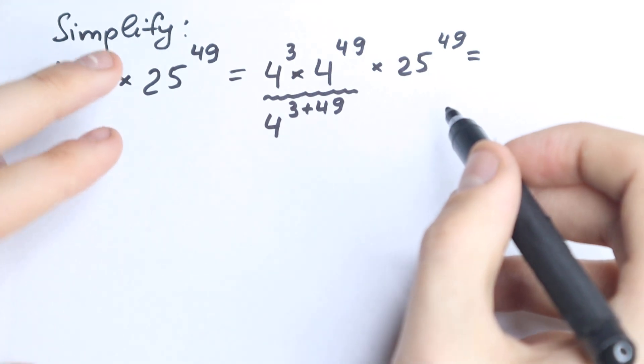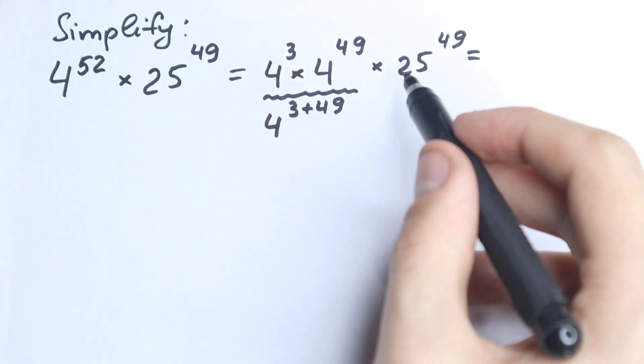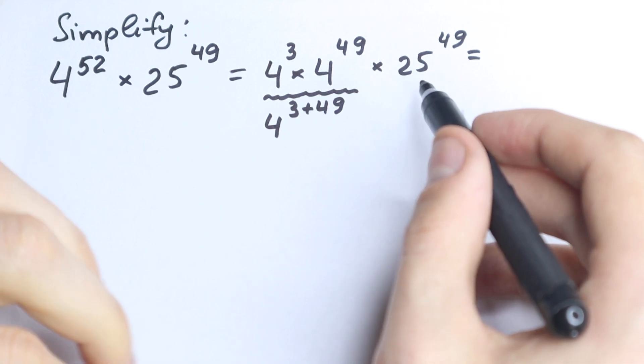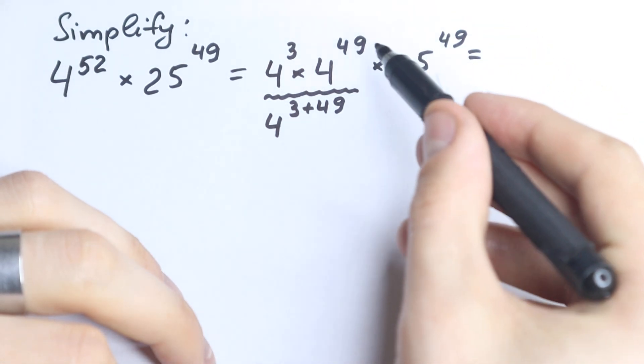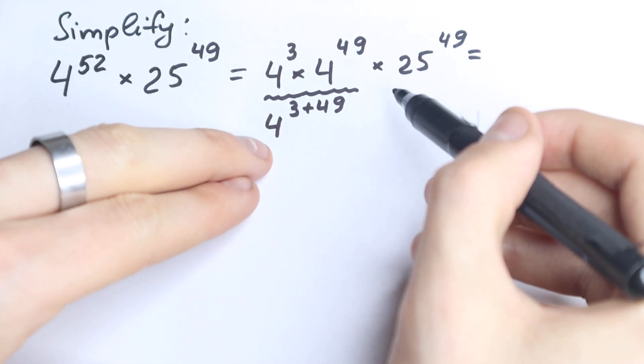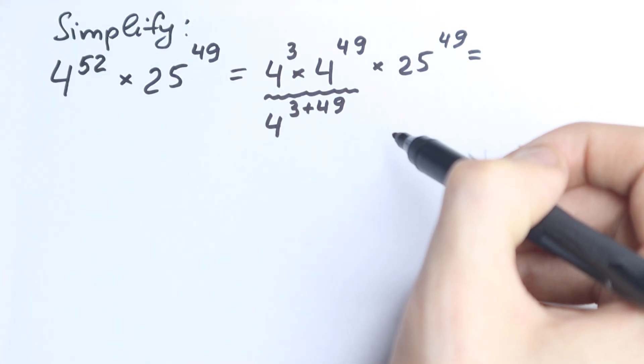I hope you understand this first step, which is a really important step, because right here we can easily do one really important trick. I'm going to show you this trick, but before I show you, I want you to understand this step. So 4 to the power 3 times 4 to the power 49 equals 4 to the power 3 plus 49, which is absolutely the same.